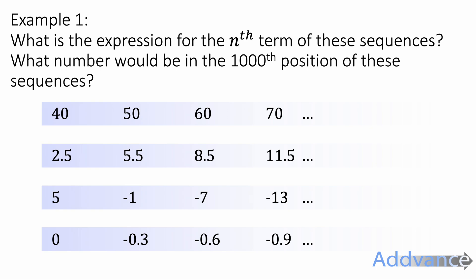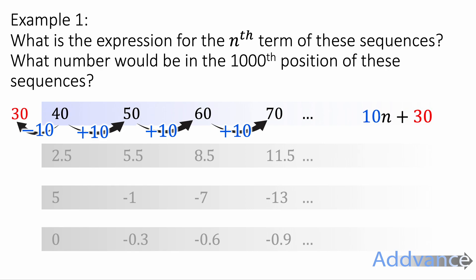Let's find the nth term first. For the first one, it's going up by tens each time, so it's going to be 10n. And we're going to add something on the end. The number that we add on the end is the previous one before the 40. So if we go backwards 10, you get 30. So it's like counting backwards in the sequence, the previous term. And that will go on the end. So it'll be 10n plus 30.